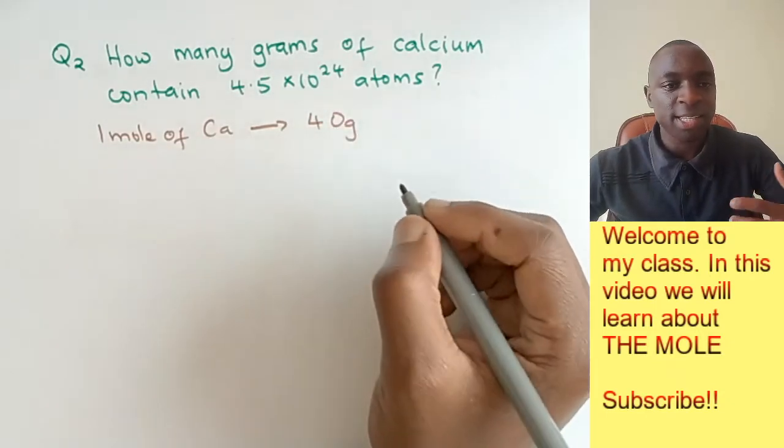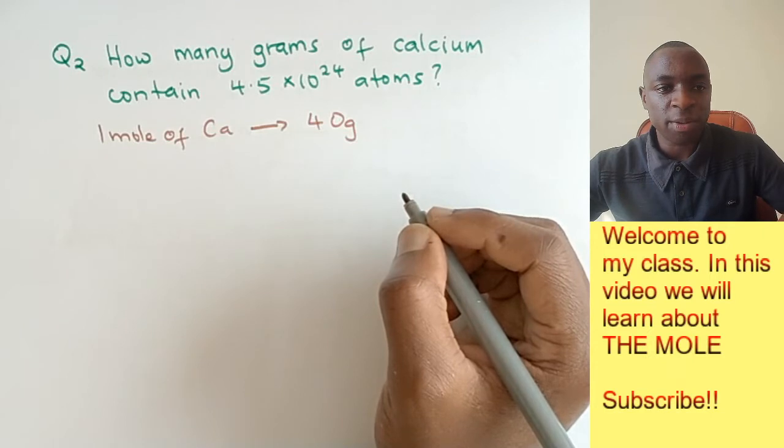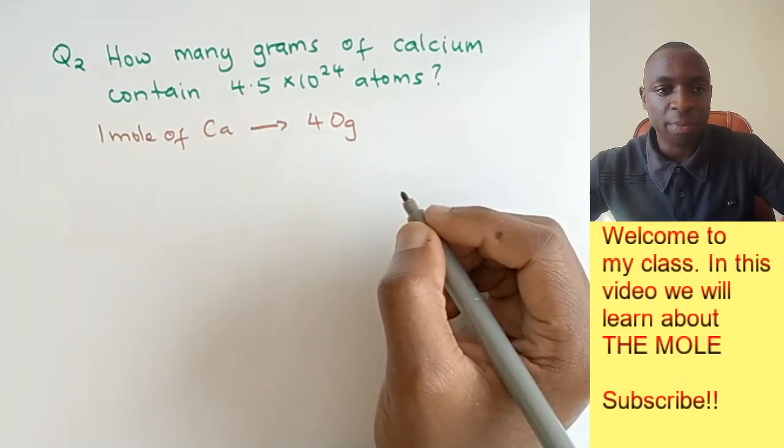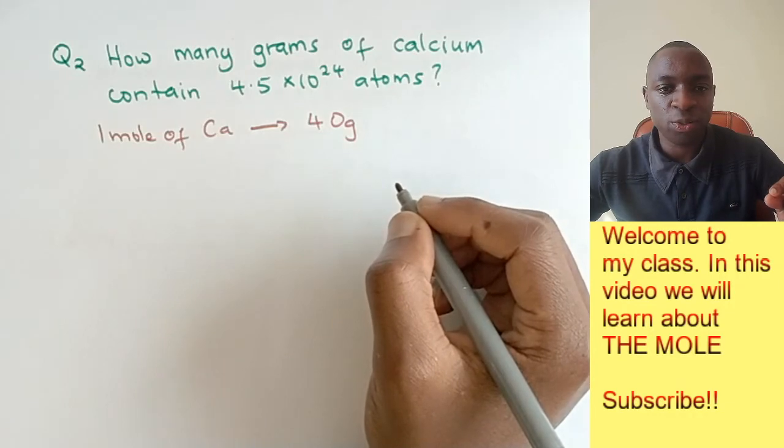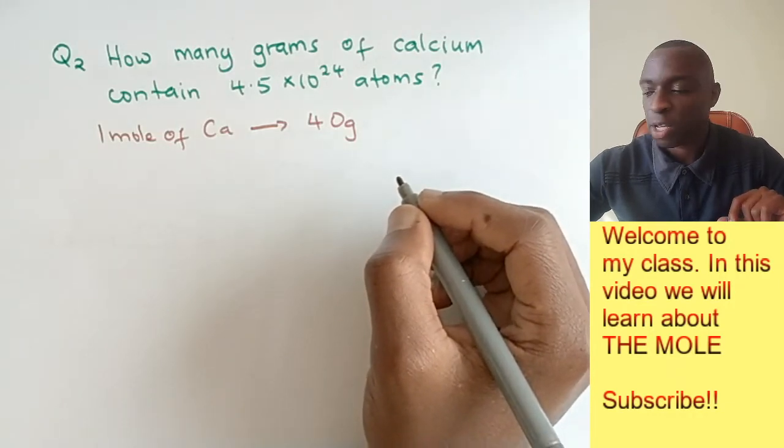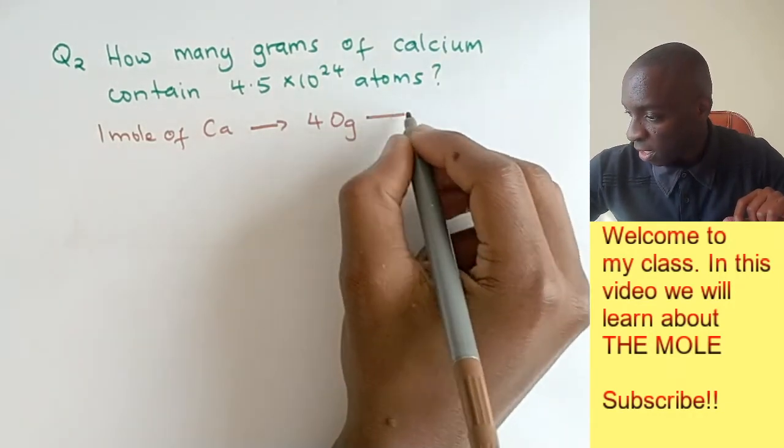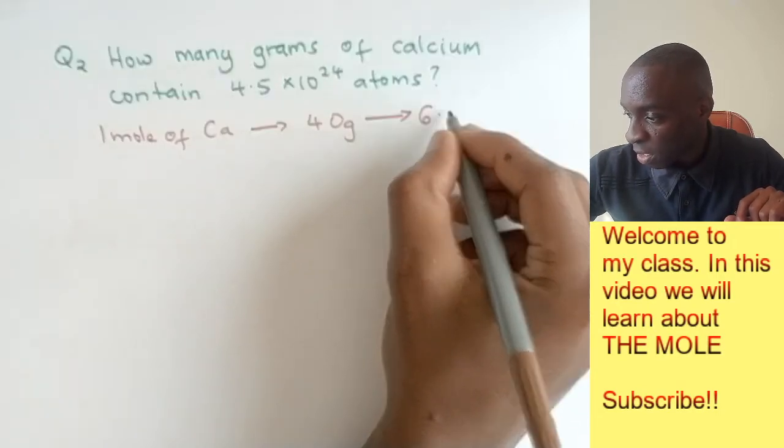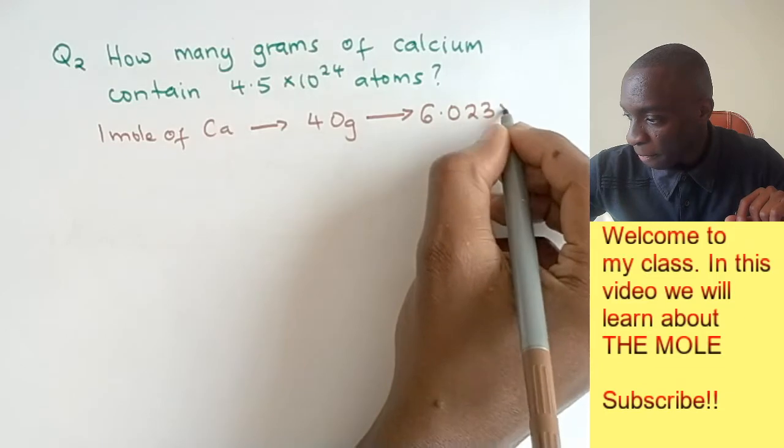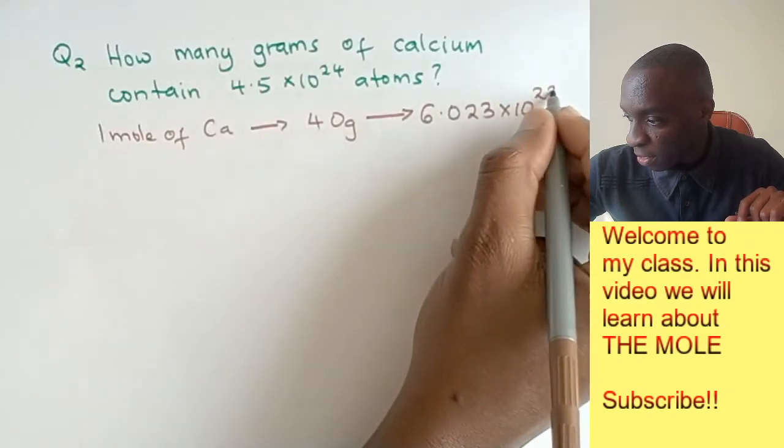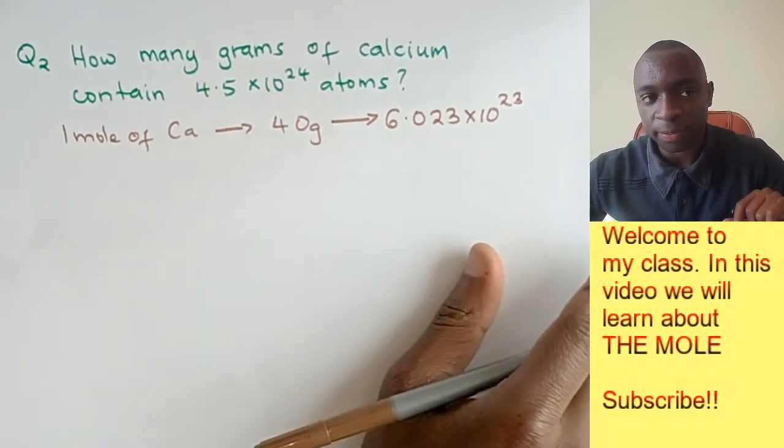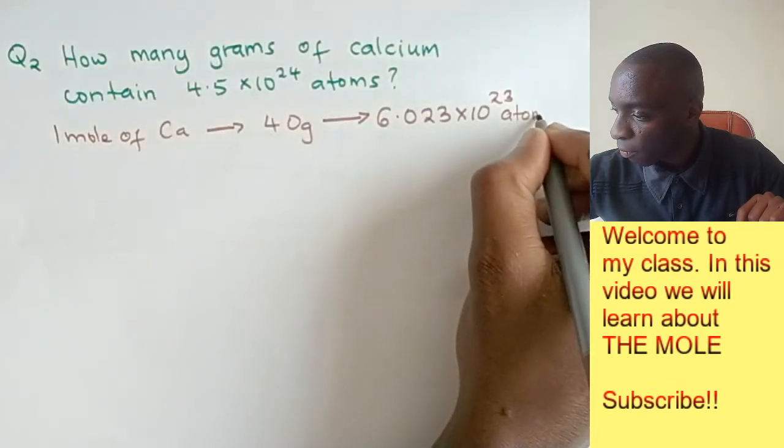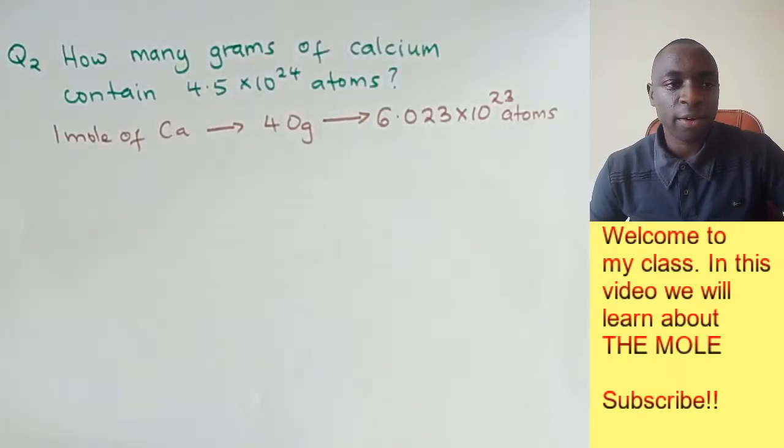This means that 1 mole of calcium has a mass of 40 grams, and 1 mole of calcium has 6.023 times 10 to the power of 23 particles.